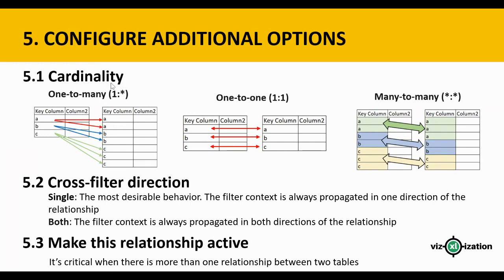Now let's learn about configuring additional options when creating a relationship. We need to understand cardinality, cross filter direction, and make this relationship active. For cardinality there are three types: one-to-many, one-to-one, and many-to-many. One-to-many is the most common — unique values on one side, duplicated values on the other. One-to-one has unique values in both tables; many-to-many has duplicated values in both.